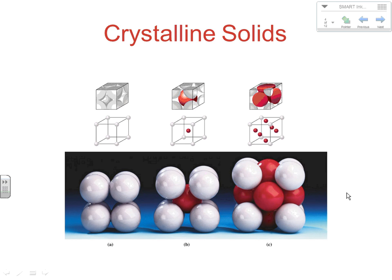On the far left we have three different representations of what the simple cubic looks like. Then we have the body-centered cubic — one at each corner and one in the middle. And on the far right we have the face-centered cube — one on each corner and one on each face.